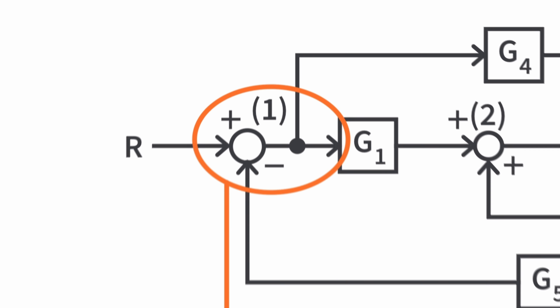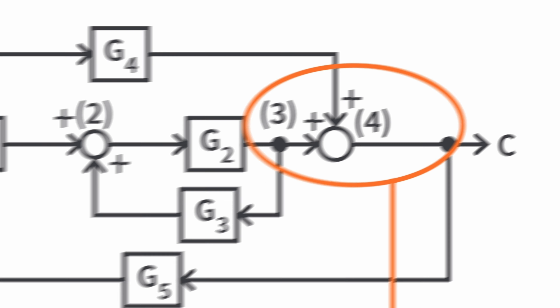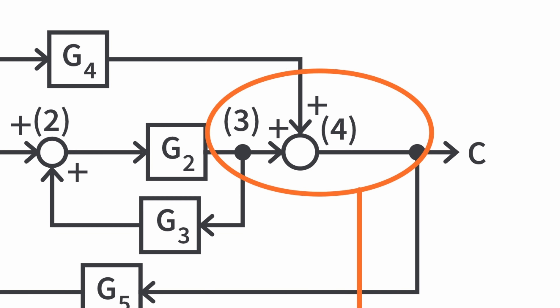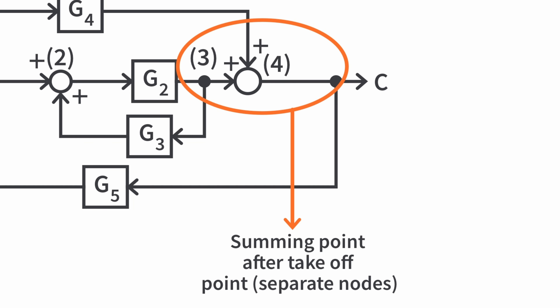The transition to take a block diagram and move it into a signal flow graph is pretty straightforward. Let me draw those out right now, and then we will show how you go from one to the other. Some of the key things to look out for are nodes, branches, and gains.